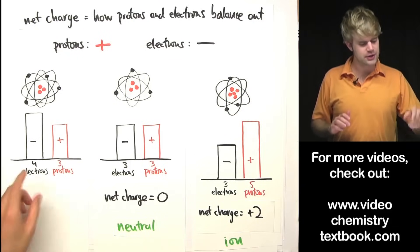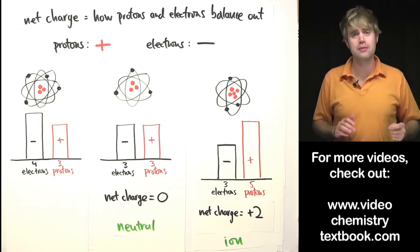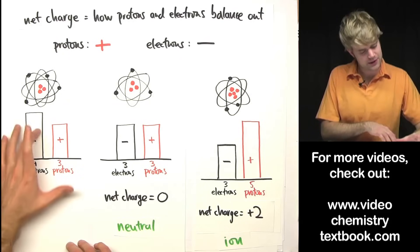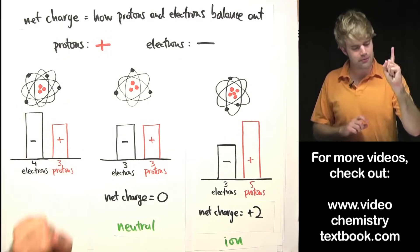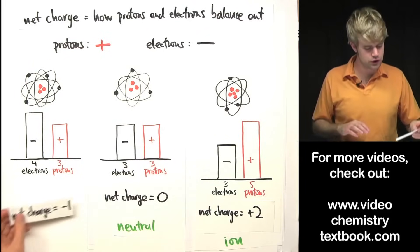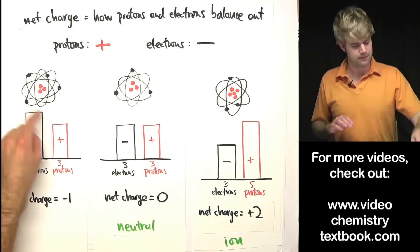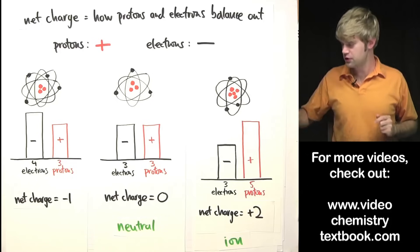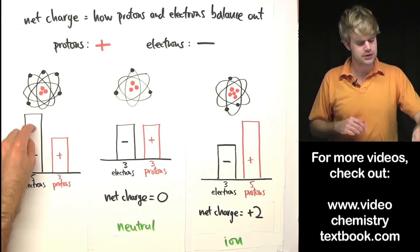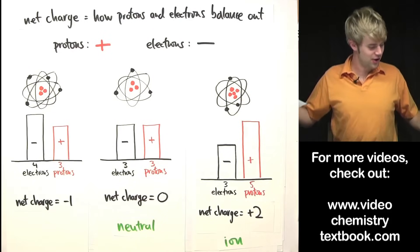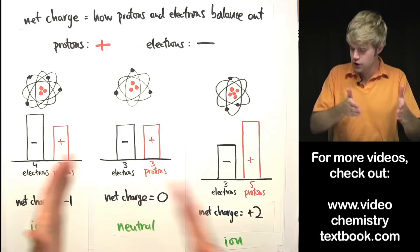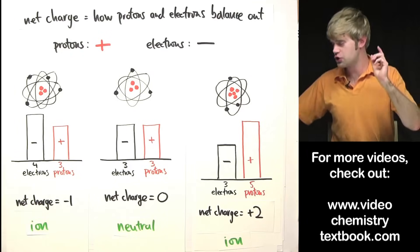The opposite can happen as well. Here's an example where an atom has four electrons and three protons — more electrons than protons. These three protons can only balance out three of the electrons, so I have one more electron that's not getting balanced out. That means the total charge is going to be minus one. And if I had five electrons — negative charge, positive charge, it doesn't matter — if it's got a charge we call it an ion.